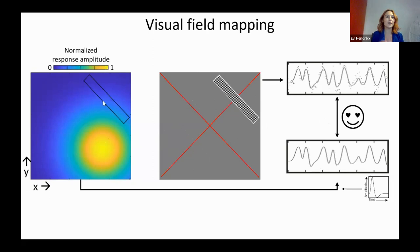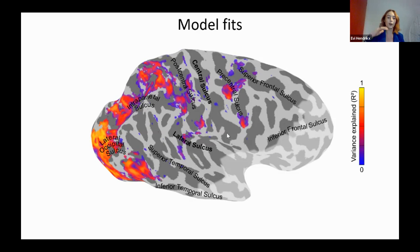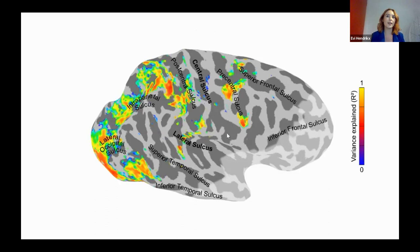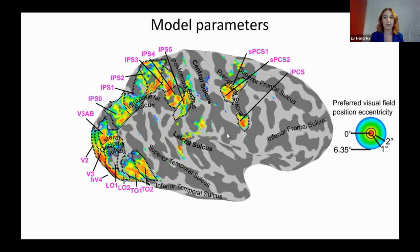This method gives us a couple of results. Initially it shows where our model predicts the data well — shown on an inflated brain, where darker areas are sulci and lighter areas are gyri, and colored spots indicate where our model performs well. It also gives us the parameters needed to fit well, allowing us to find visual field maps. For example, I'm plotting eccentricity — how far from the center the receptive field of each voxel is.